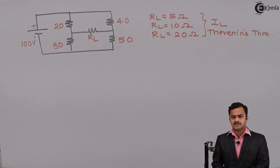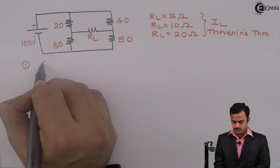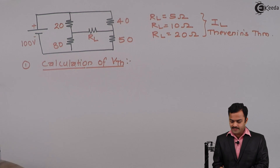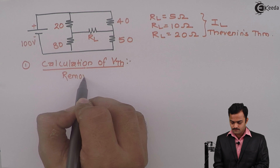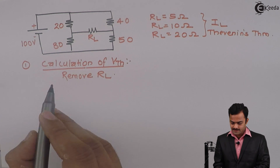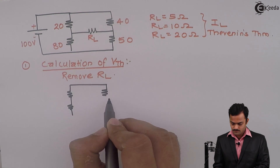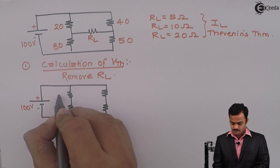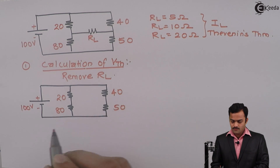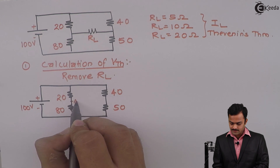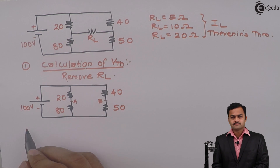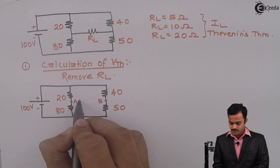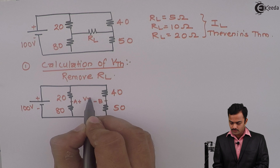Let's follow the procedure that we have discussed. First, calculation of VTH. In order to get VTH, we need to remove RL. Once we have removed RL, we will get two terminals. We will mark that as A and B. Our job is to get the voltage across A and B, so I will consider A positive with respect to B. This voltage we will denote as VTH.